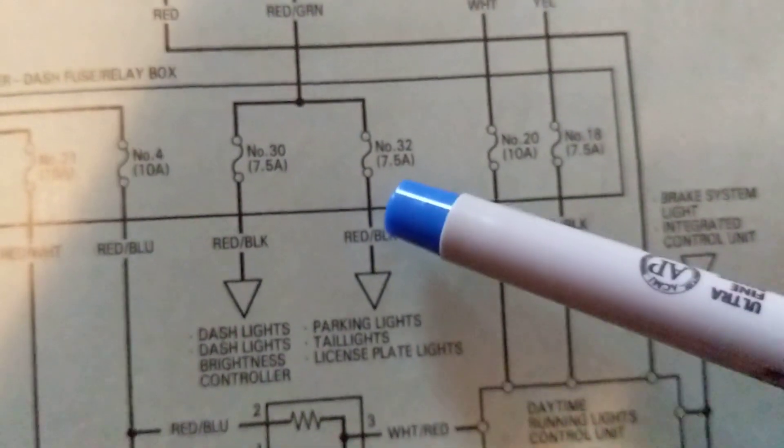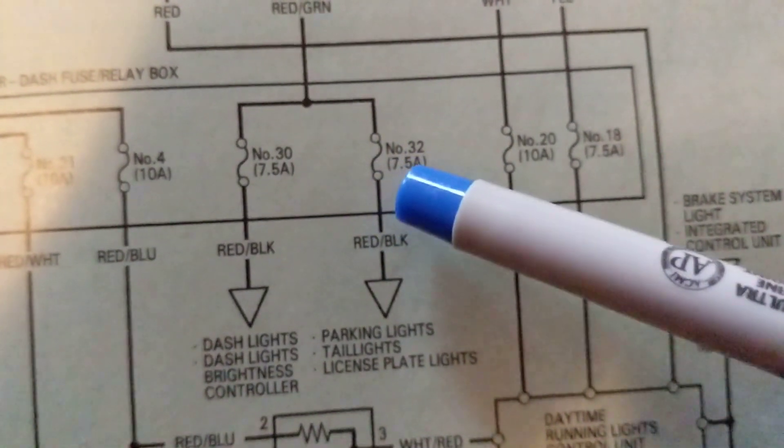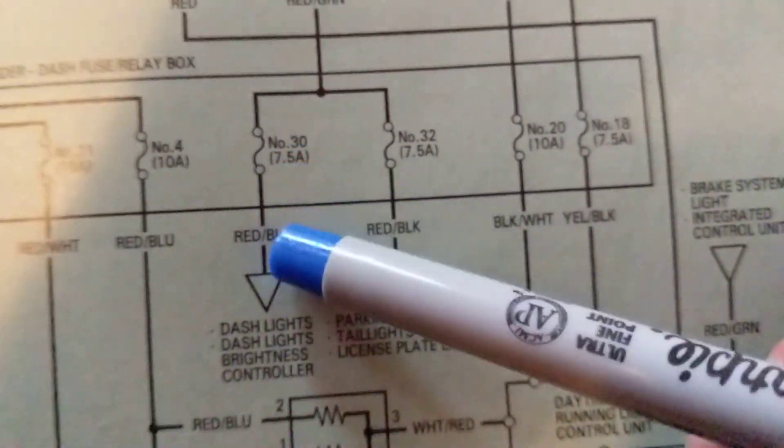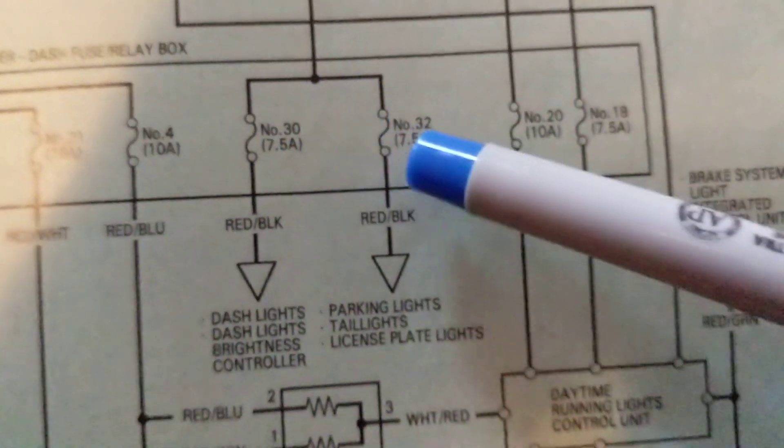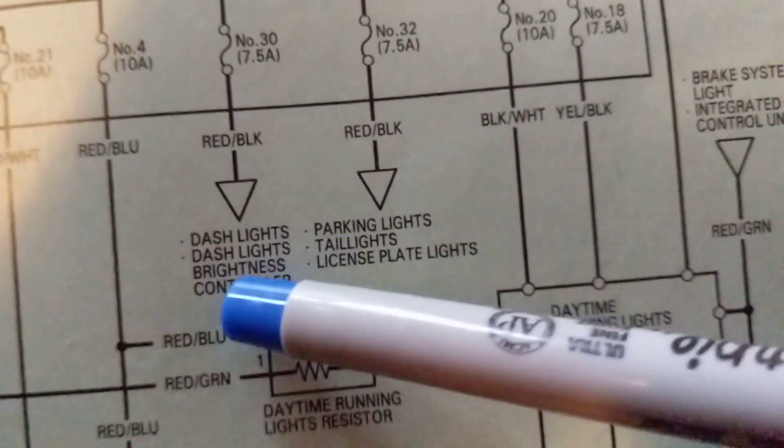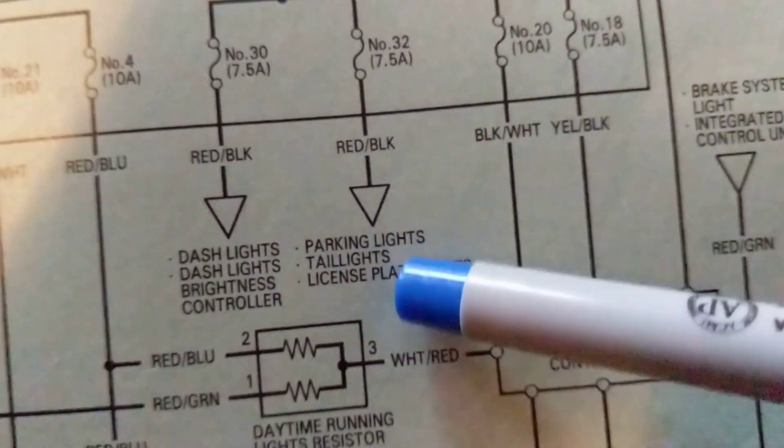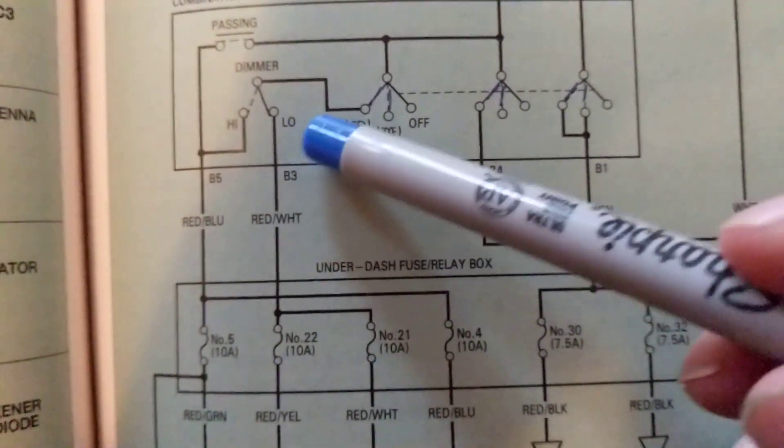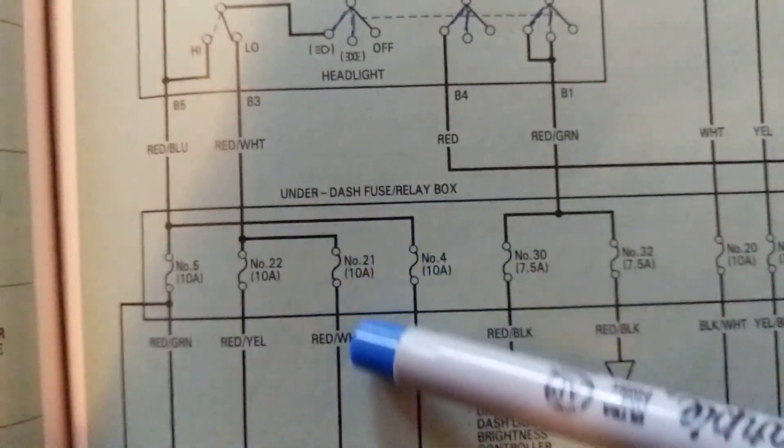Again, red green becomes one side of the fuse. The other side of fuse goes to red black. Other side of this fuse, red black, which goes to dash lights and brightness controller. And this will go to parking lights and the other things. We come over here, again more fuses.